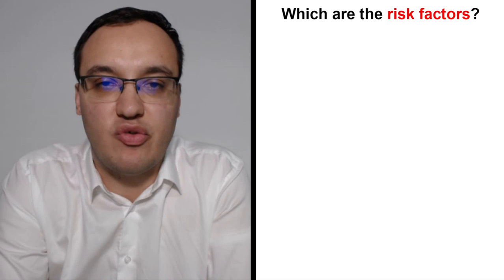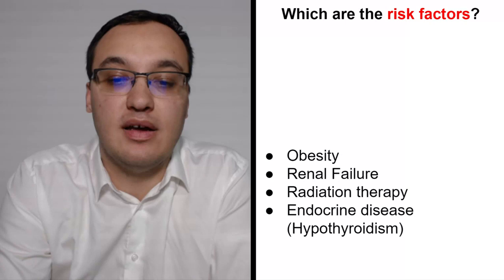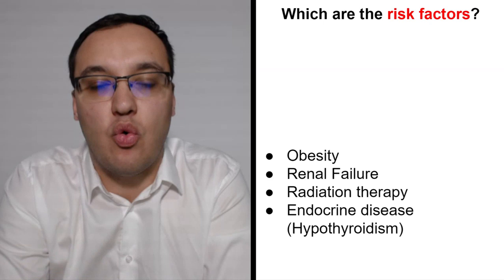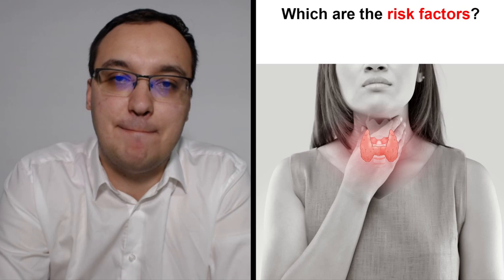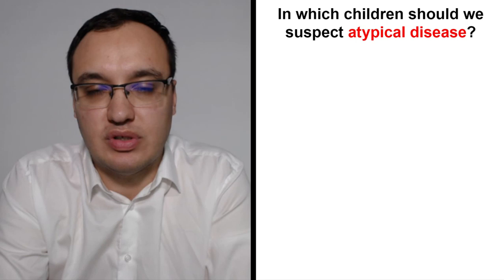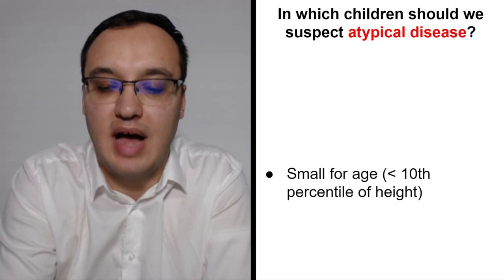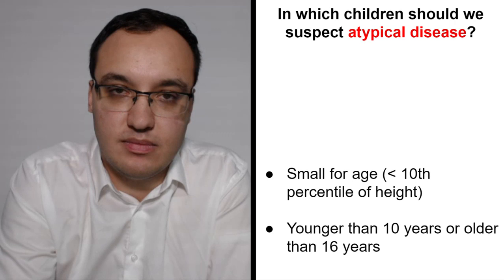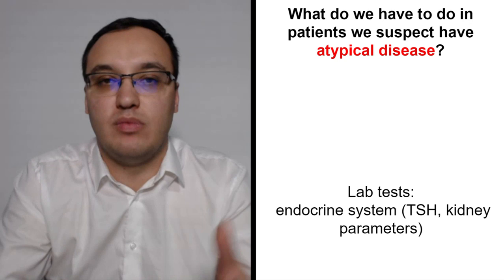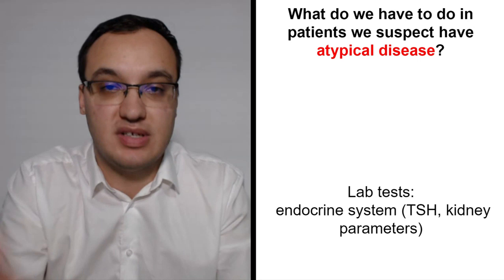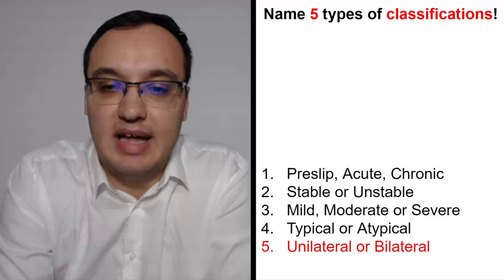Atypical disease means SCFE plus risk factors: obesity, renal failure, radiation therapy, endocrine disease such as hypothyroidism, or genetic conditions like Down syndrome. Suspect atypical disease in children who are small for their age, younger than 10, or older than 16. In suspected atypical cases, perform lab tests including TSH and kidney parameters.